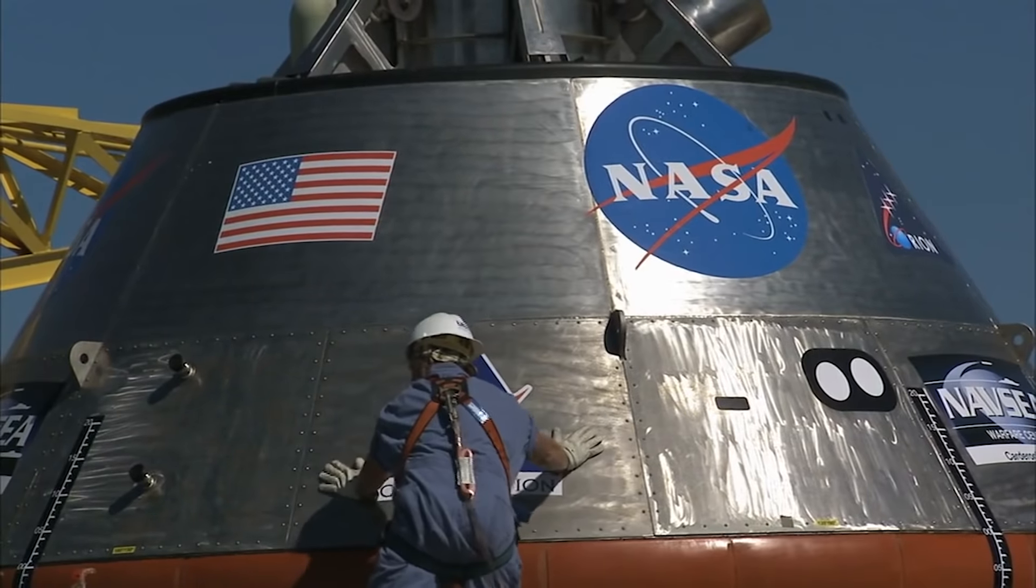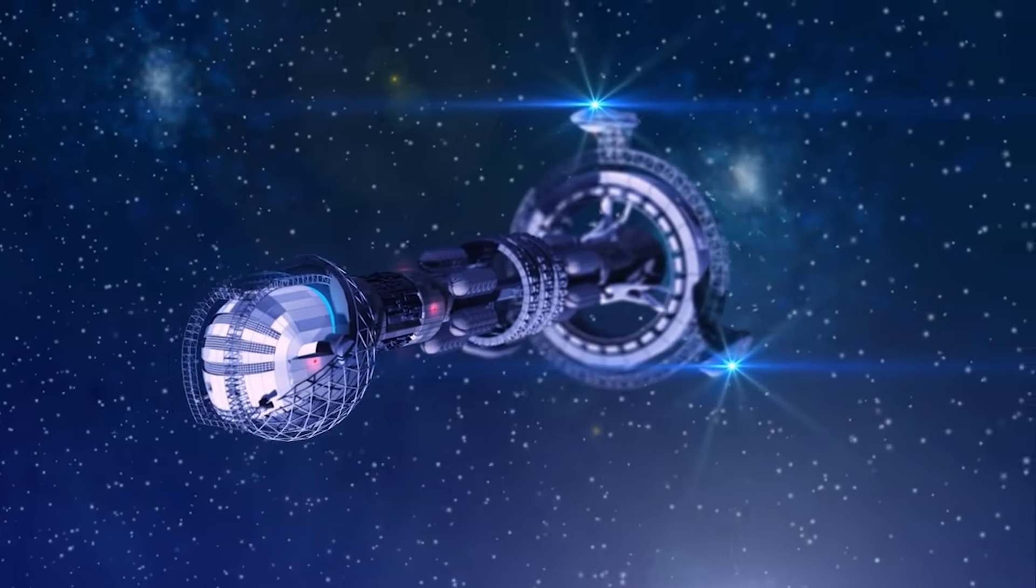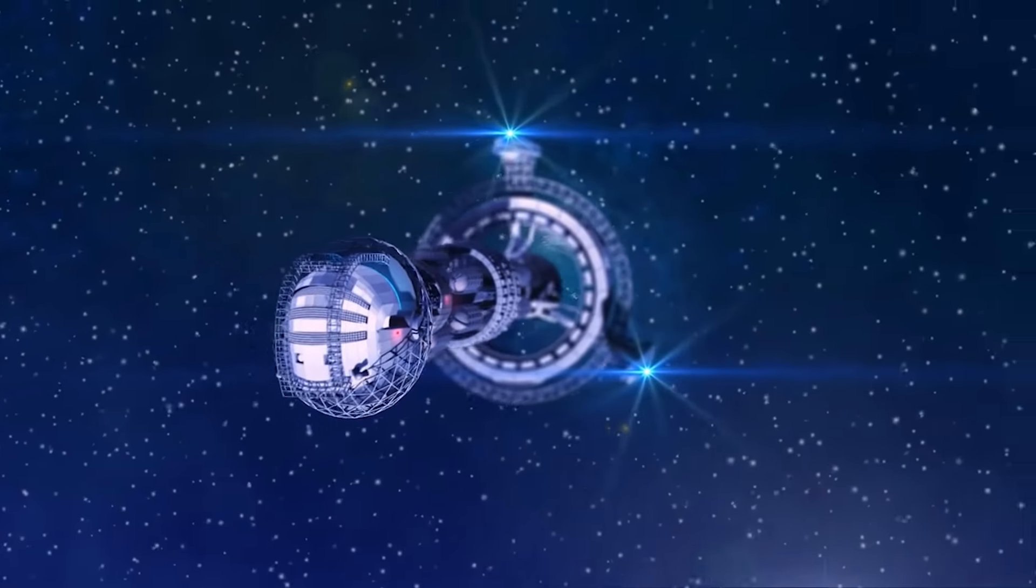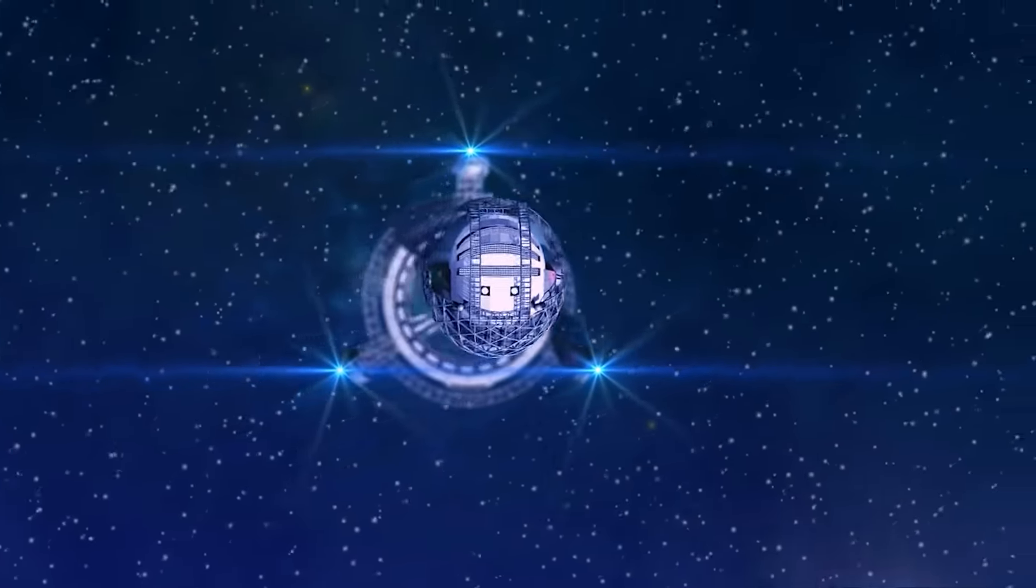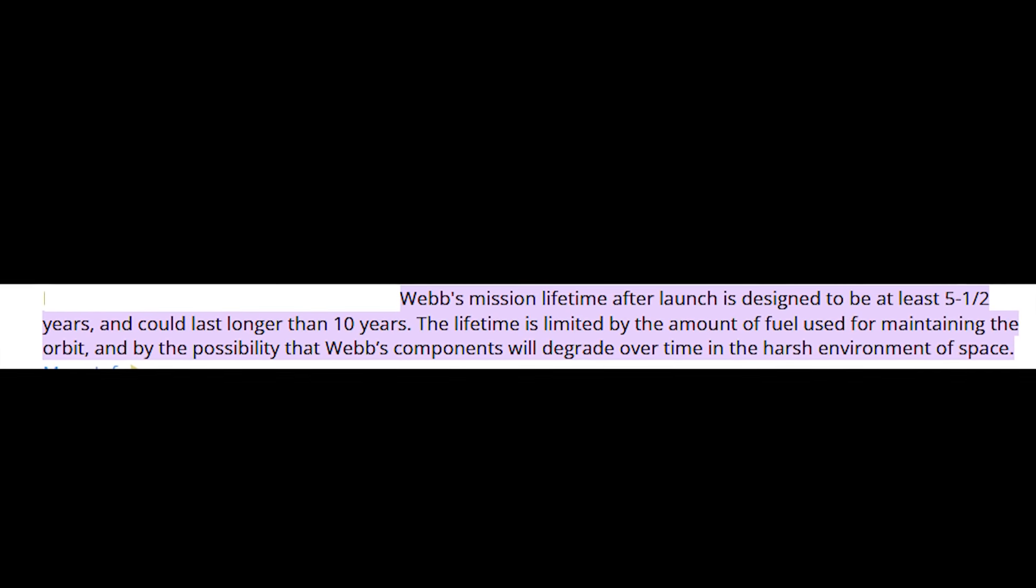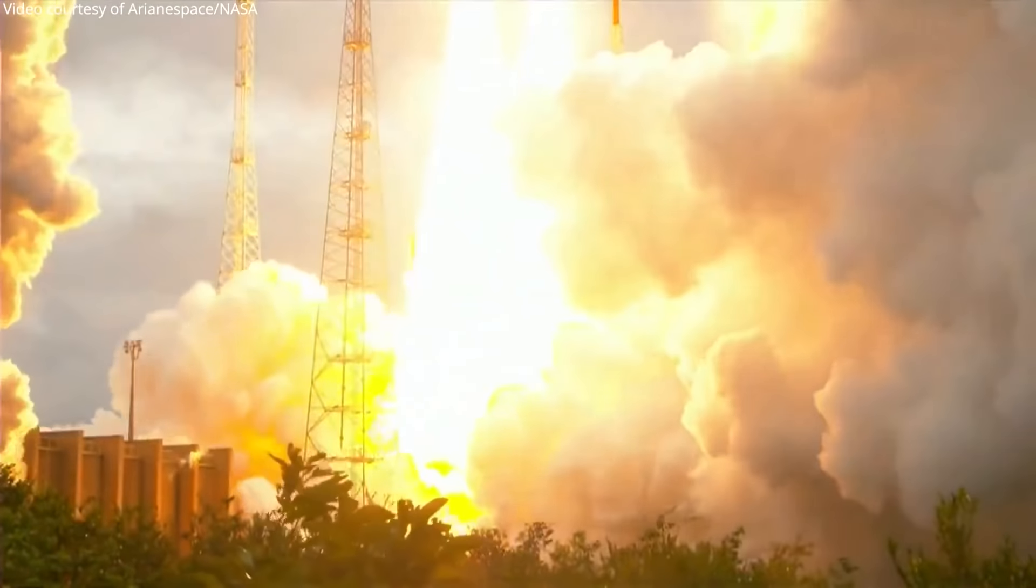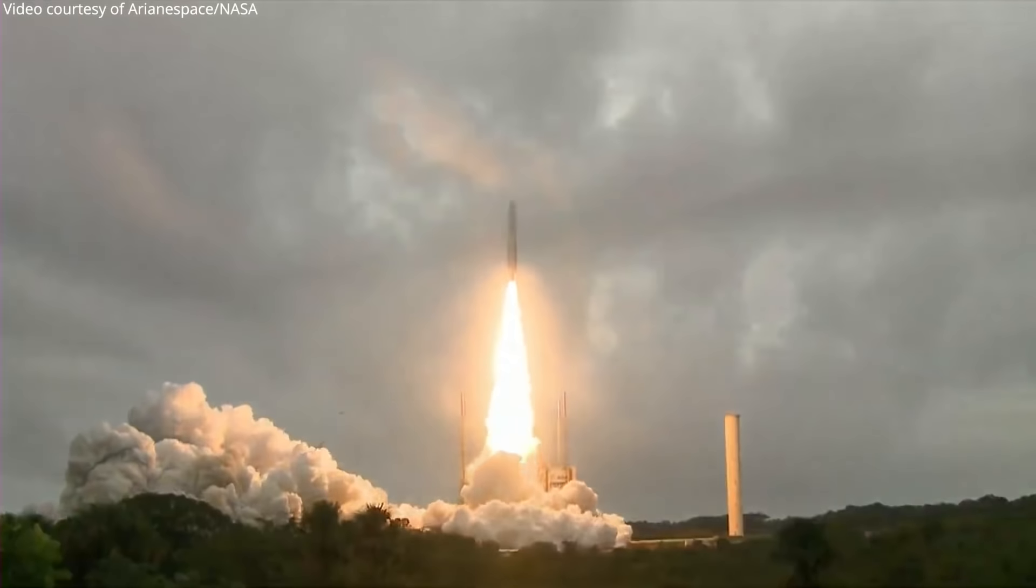However, if the appropriate technology is developed, scientists may be able to send a robot to refuel the Webb, thereby extending its useful life even further. NASA had initially predicted the telescope would only last 10 years, but thanks to a successful launch, enough fuel is left to keep the JWST operational for another 20 years.